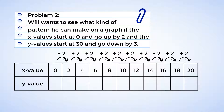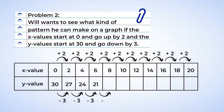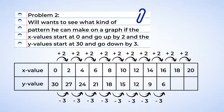Now for the y values. We're going to start with 30 and then subtract 3 each time: 30, 27, 24, 21, 18, 15, 12, 9, 6, 3, 0.